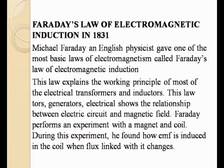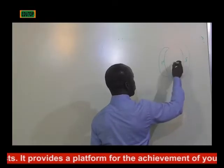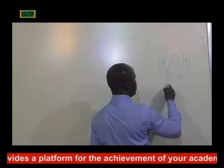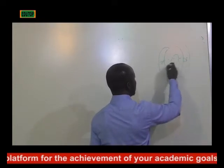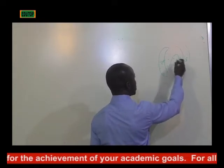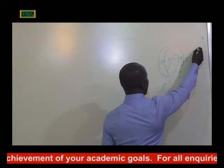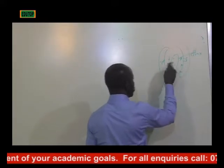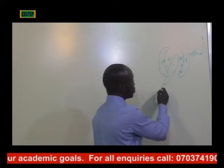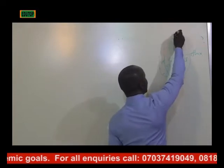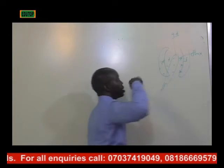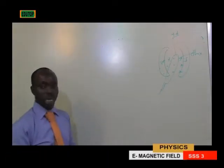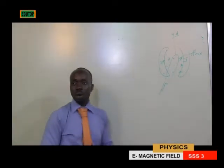During this experiment, he finds how EMF is induced in the coil. With a magnet — north pole, south pole — and a coil in between, the magnetic flux tries to bind the two poles together. This coil will be breaking the magnetic flux, and as a result, potential difference or EMF will be induced at the edge of the coil.